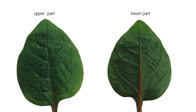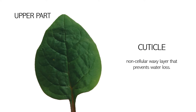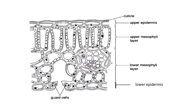The left side is the upper part of the leaf and the lower part of the leaf is on the right side. The upper part of the leaf has a layer called the cuticle — it is a waxy layer that contains no cells and prevents water loss. Let us see where it is found in the cross section of the leaf. This is the cross-sectional cut of the leaf and we can see the cuticle on top.